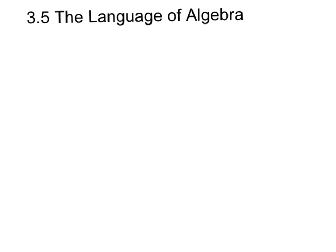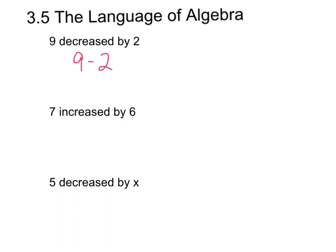Alright, so let's start with three basic concepts. Here are three very basic expressions. The first one is nine decreased by two. We're not solving these at all. We're not simplifying them. I don't want an answer. All I want you to do is represent these sentences as mathematical expressions. Nine decreased by two would be nine minus two. Seven increased by six would be seven plus six. Five decreased by x would be five minus x.